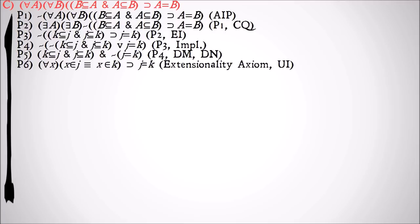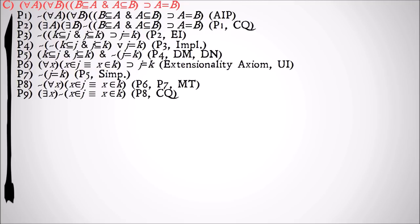Then we're going to use the extensionality axiom to show that if for all X, X is a member of J is materially equivalent to X is a member of K, that implies that J is equal to K. We have from premise 5, it's not the case that J is equal to K. So we can use modus tollens to run that backwards.